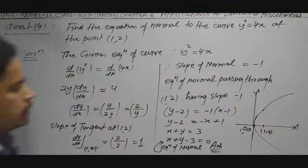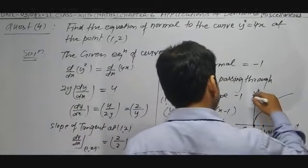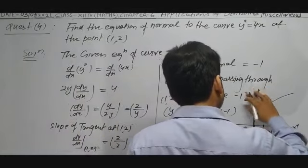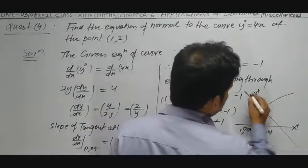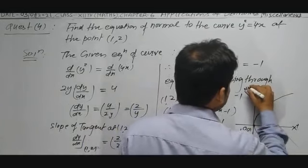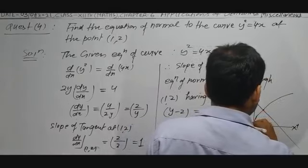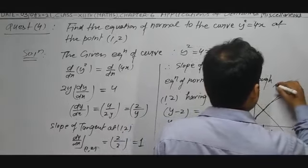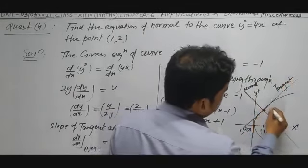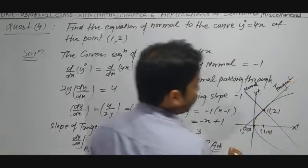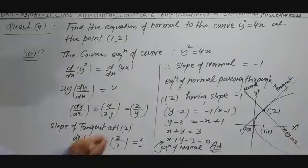The point (1, 2) is marked on the parabola. The equation of the normal is x + y = 3. This is the line representing the normal, and we also have the tangent shown at the point (1, 2). The equation is x + y = 3. This is the figure.